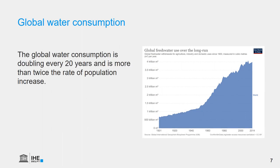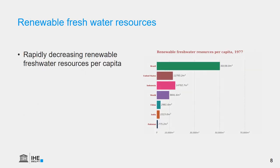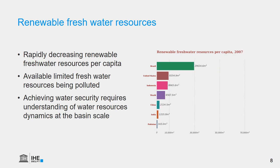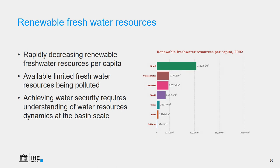When we look at global water consumption, it is doubling roughly every 20 years — more than twice the rate of population growth. The forecast is that already by 2030, more than half of the world population is going to face water shortage. The availability of renewable fresh water resources per capita is decreasing very rapidly, and these limited freshwater resources are becoming more and more polluted. Therefore, achieving water security and increased resilience to hydrological extremes requires a good understanding of water resource dynamics at the basin scale.